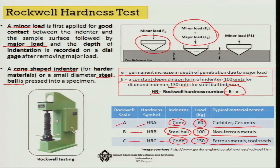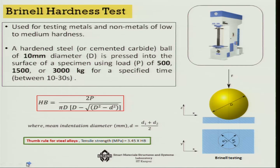That is the Rockwell hardness test, and a typical Rockwell hardness machine can be seen here. The next very popular test is the Brinell hardness test, which is also used for testing metals and non-metals of low to medium hardness.